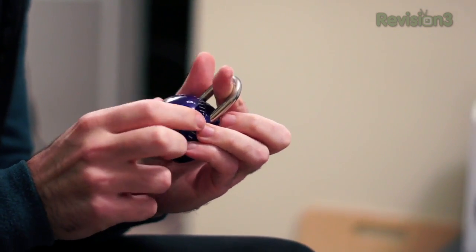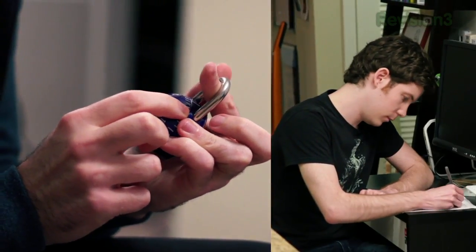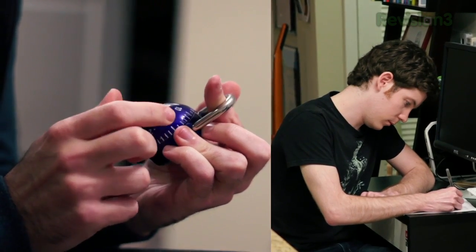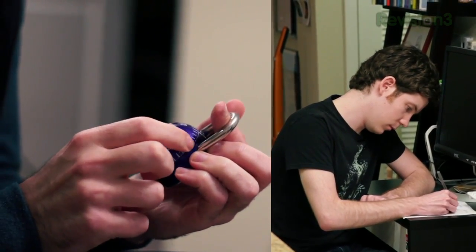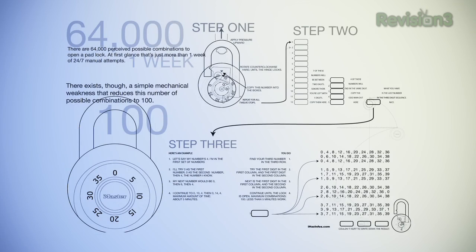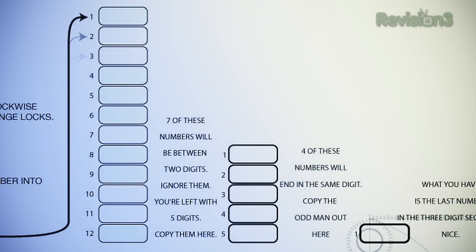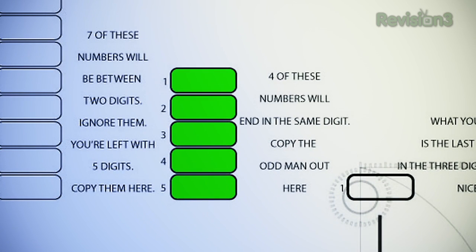Let's do that. It catches at about 1, about 5, 8, about 11. Once you make it through the dial you should be left with 12 numbers that it caught at. Take seven of those numbers — they'll be the approximate numbers that weren't quite on the line — throw those out, and you should be left with five numbers.